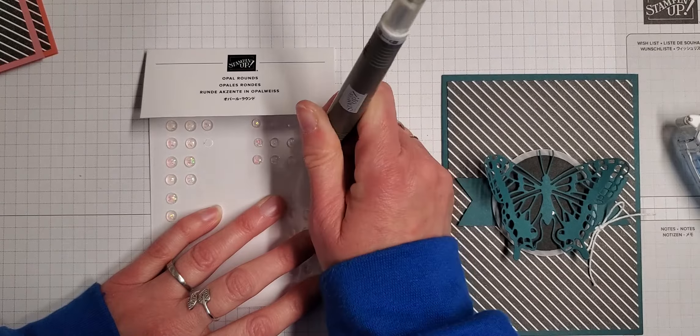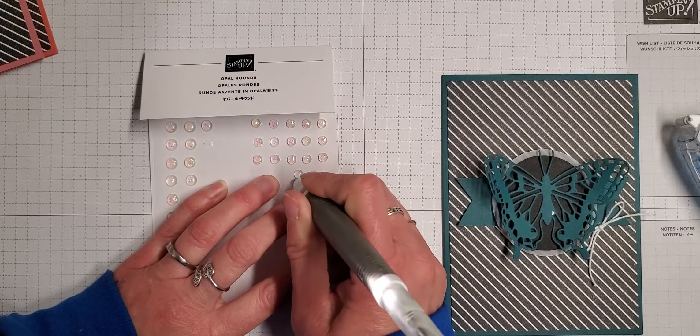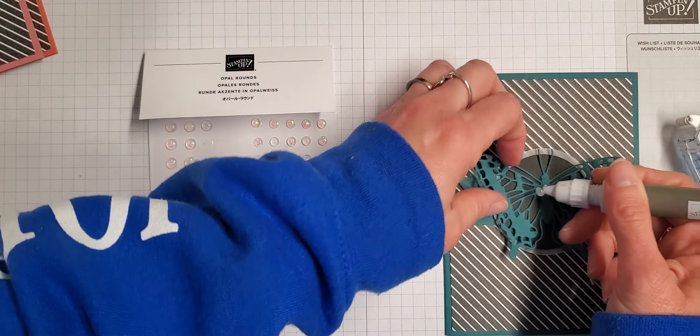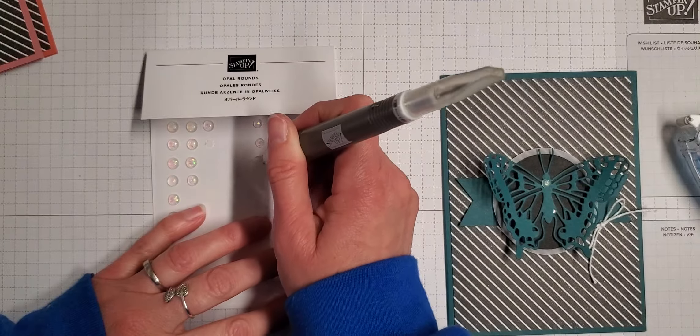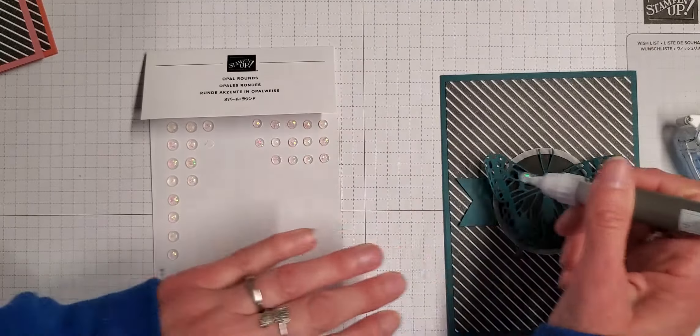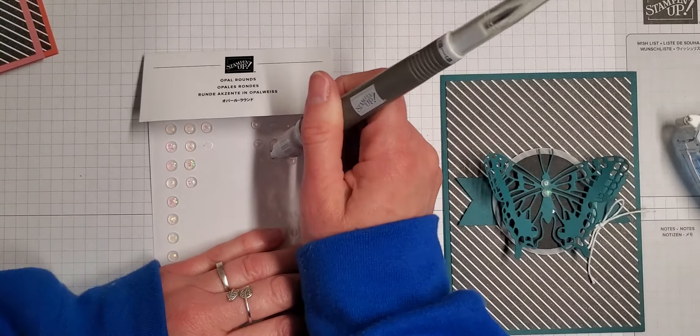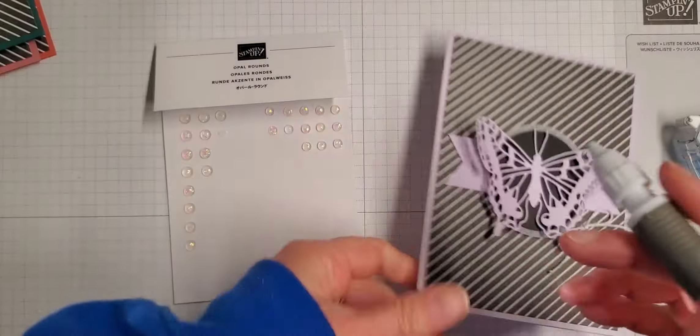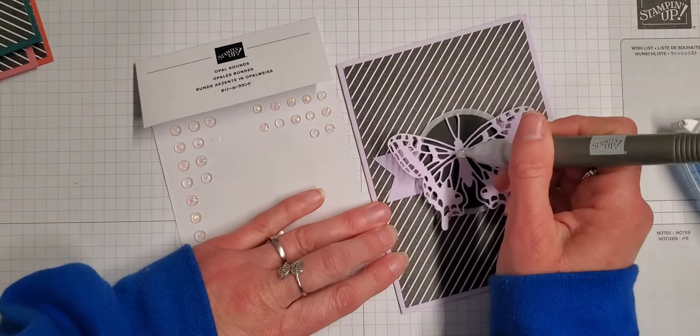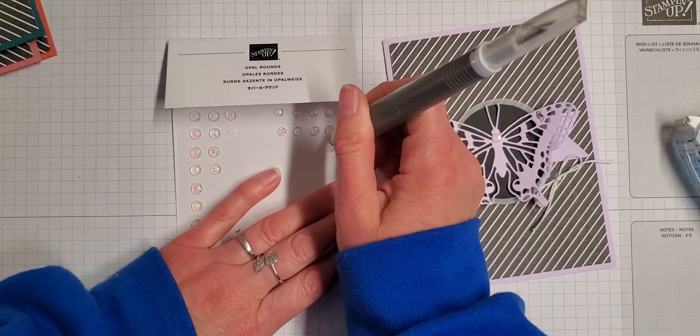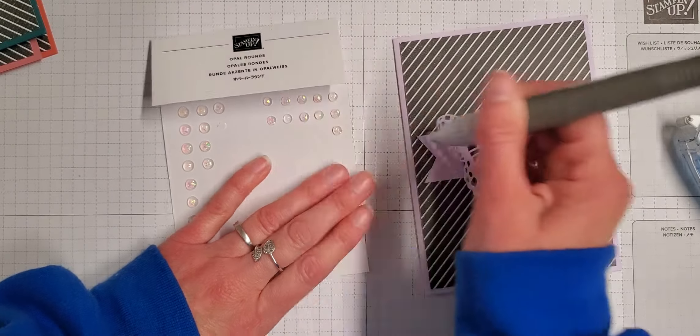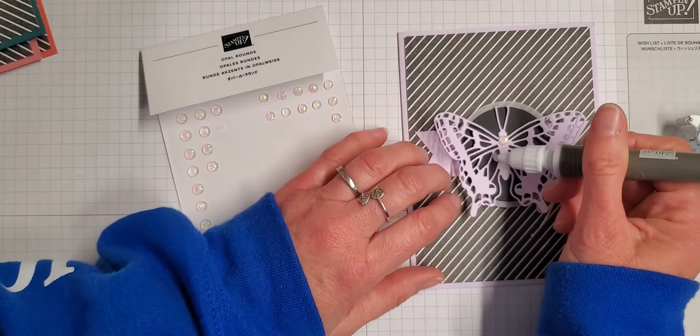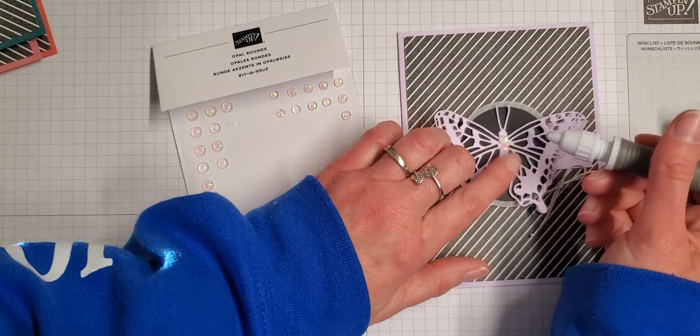I feel like these work better with the smaller embellishments. You've got to get it just right for it to pick it up. Also I'm running out of putty in here so that doesn't help. I love these rounds because they kind of pick up whatever color you put them on, so they work beautifully with this.